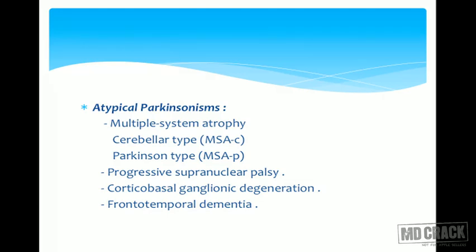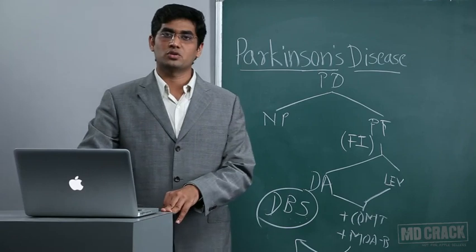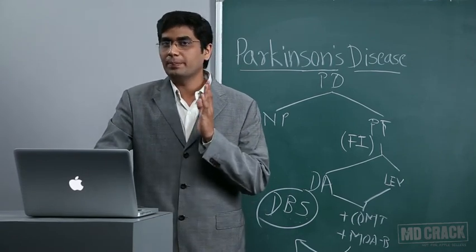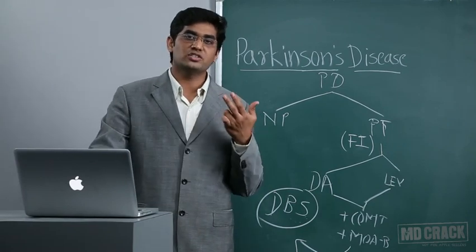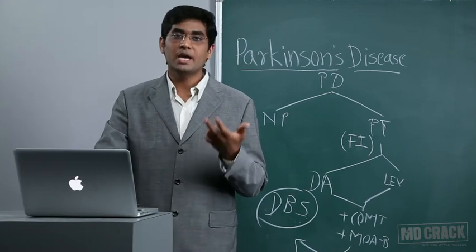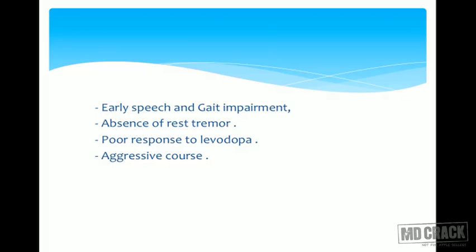Atypical parkinsonism: if a patient is not responding to levodopa, question your diagnosis. Differential diagnoses include multiple system atrophy, progressive supranuclear palsy (PSP), corticobasal ganglionic degeneration, and frontotemporal dementia. Features of atypical parkinsonism: non-response to levodopa, less classical clinical features, absent tremors or bradykinesia, but early falls and early speech impairment are common. The course is aggressive — patients deteriorate faster than in typical Parkinson's disease.